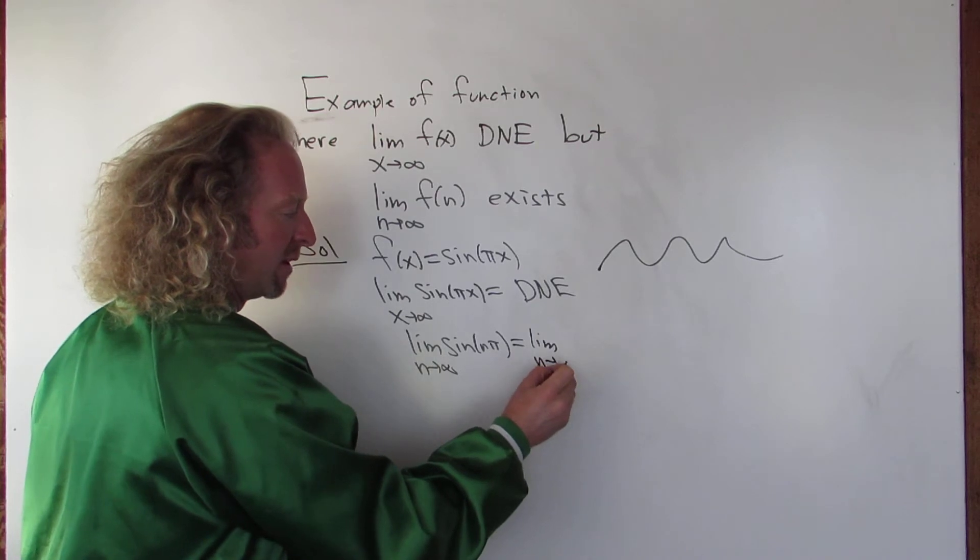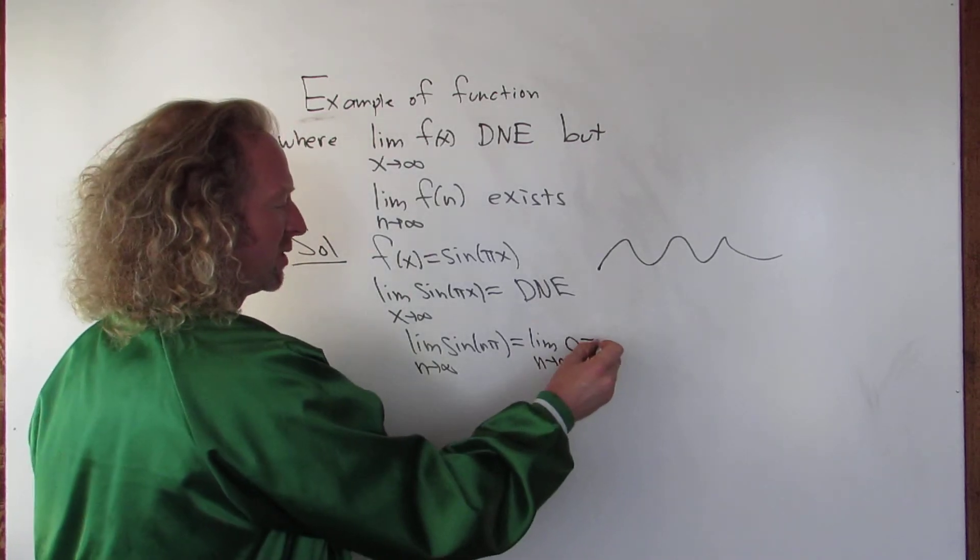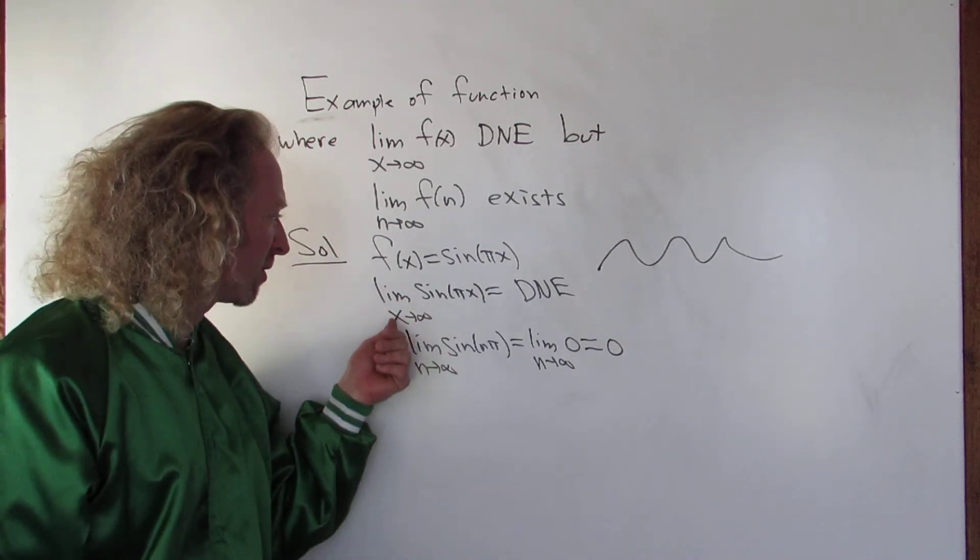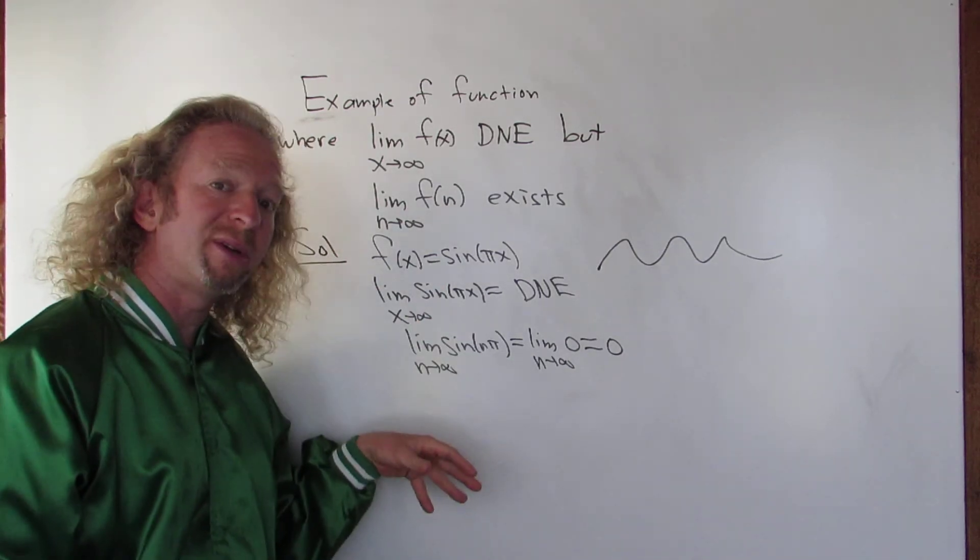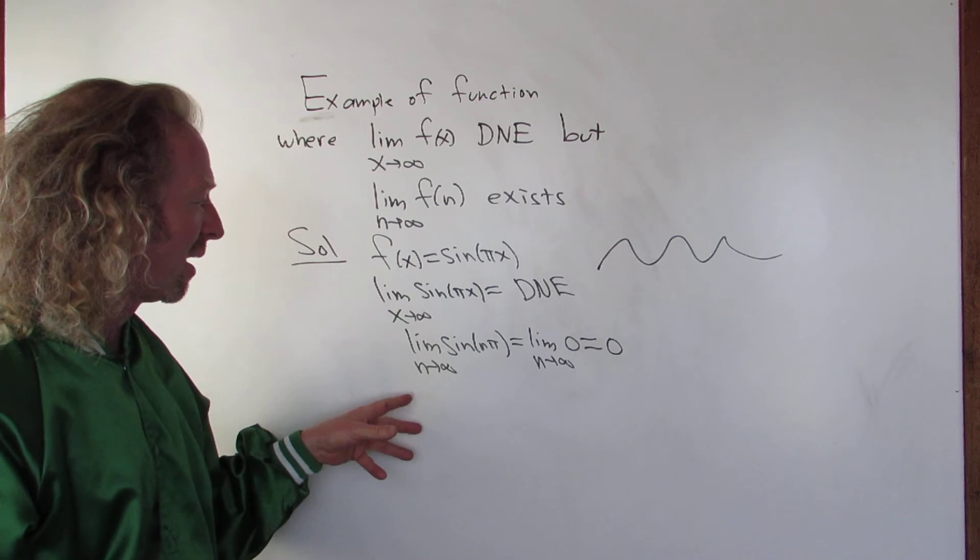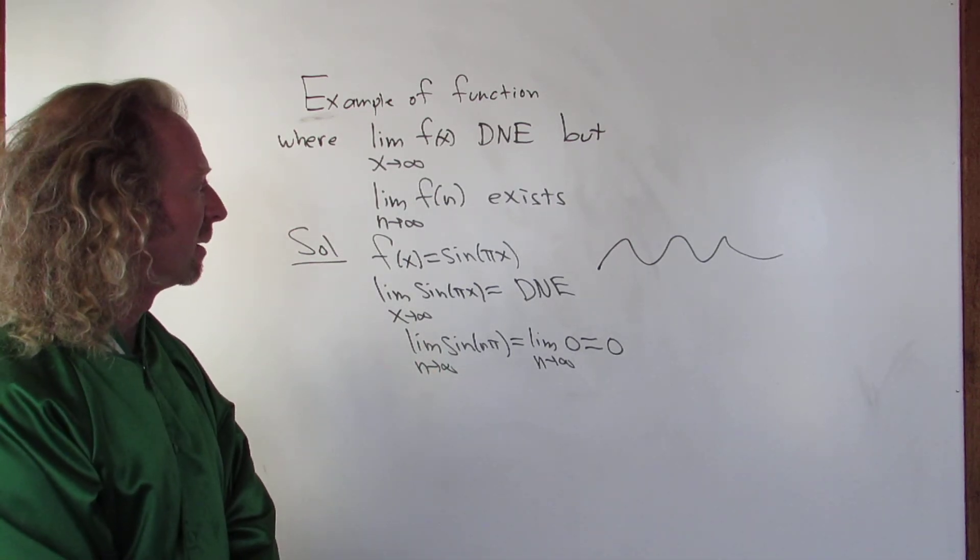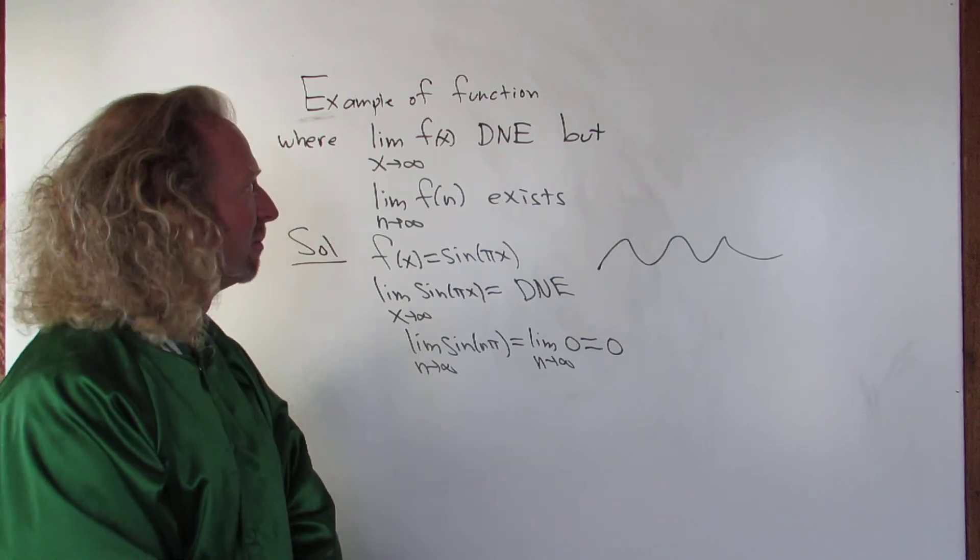And that limit is just zero. So the regular limit in terms of real numbers does not exist, but the limit exists as a sequence. A nice example, kind of an interesting problem. Hope that helped.